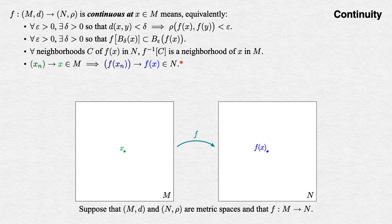Every formulation of concepts in terms of sequences will be starred, because in arbitrary topological spaces these statements are in general weaker than the actual definitions. All the other formulations imply the sequence formulations, but not vice versa in general. But in our context of metric spaces, all these formulations are equivalent, and the sequence formulations can be very useful in real analysis.